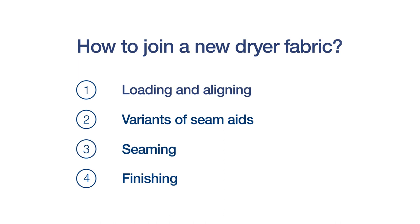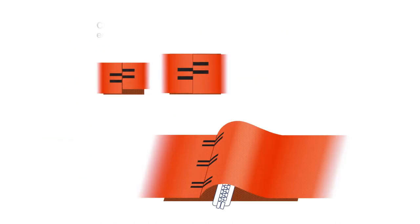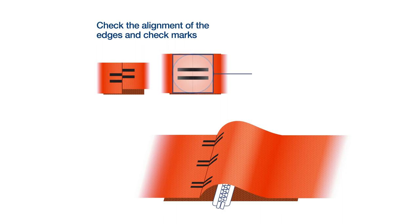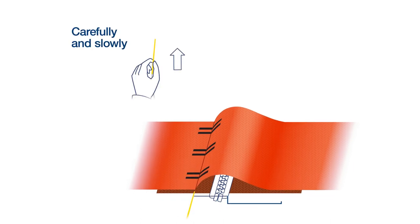Align the first set of check marks and mesh the loops to the fabric edge. Carefully insert the seam wire.